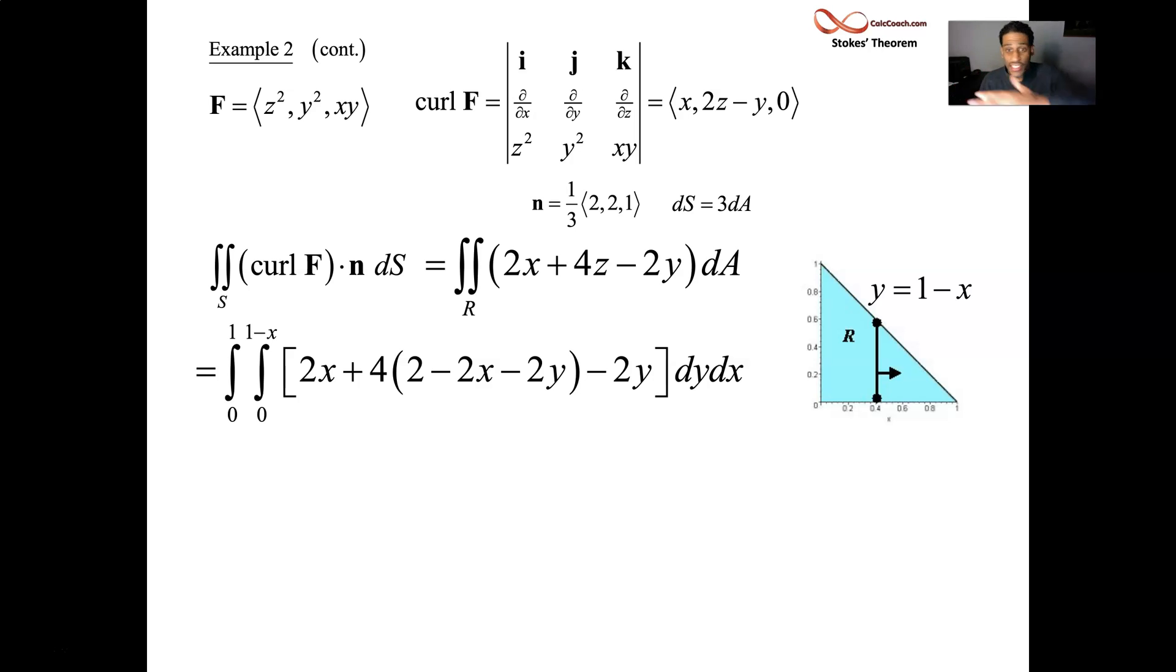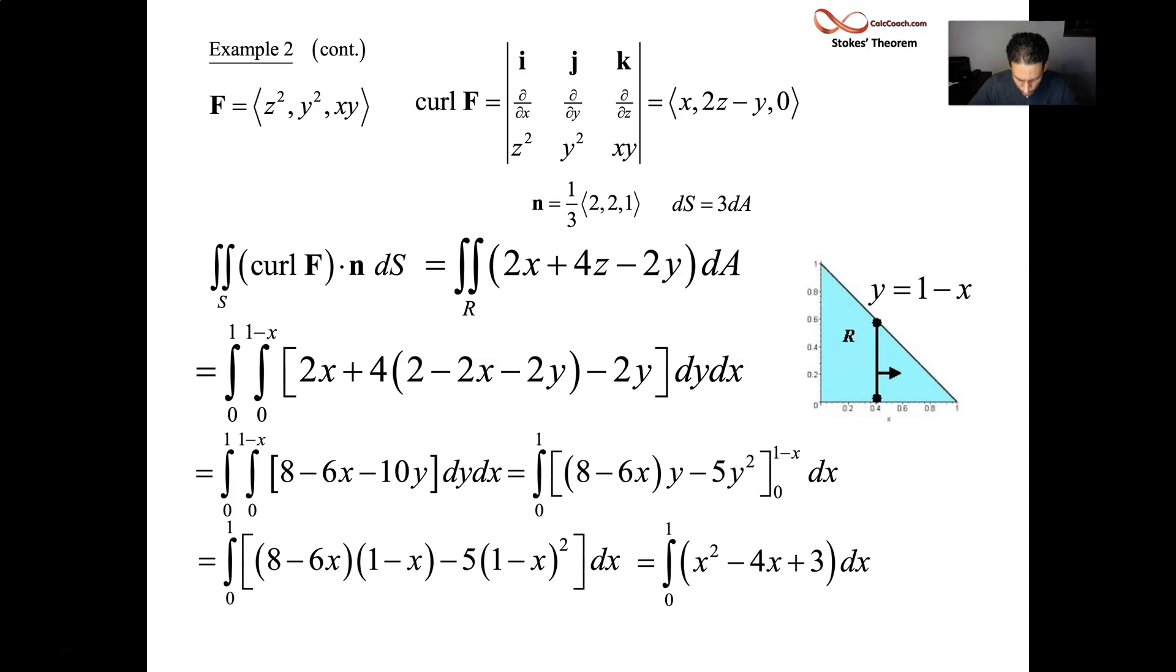I chose to do it dy dx. Nothing wrong with doing it dx dy. But, in dy dx, we go from zero up to the line. That's the line called y equals 1 minus x. The slope is negative 1 and it intersects the y axis at 1. So that's y equals 1 minus x. And, multiply and simplify a nice little double integral here. I'll let you grind out the results there. You can pause it and I'll click through it here. But it ends up simply as four thirds.